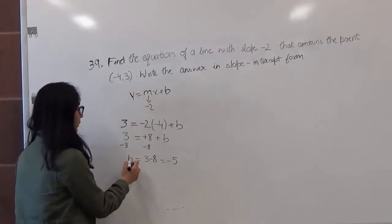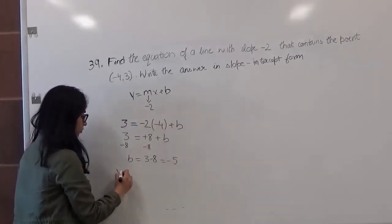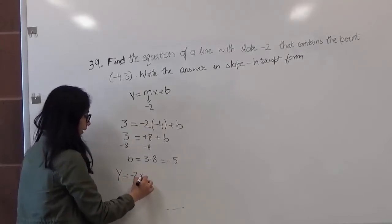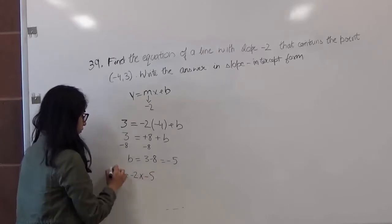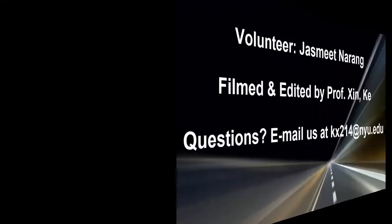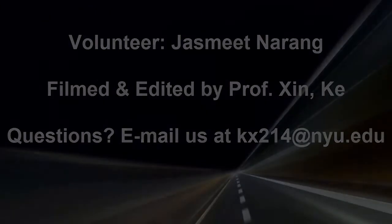Now I'll just use my b and slope and write that into slope-intercept form. So I get y = -2x - 5. So this is my answer.